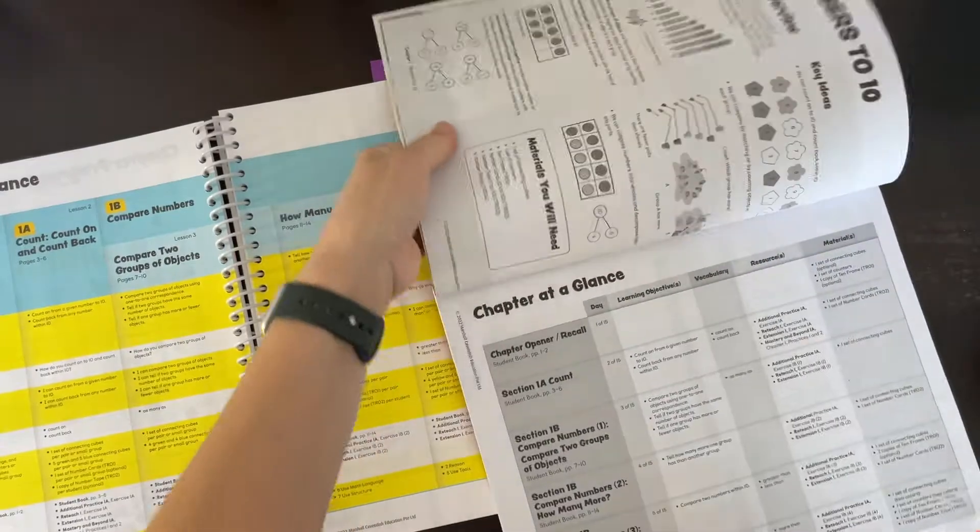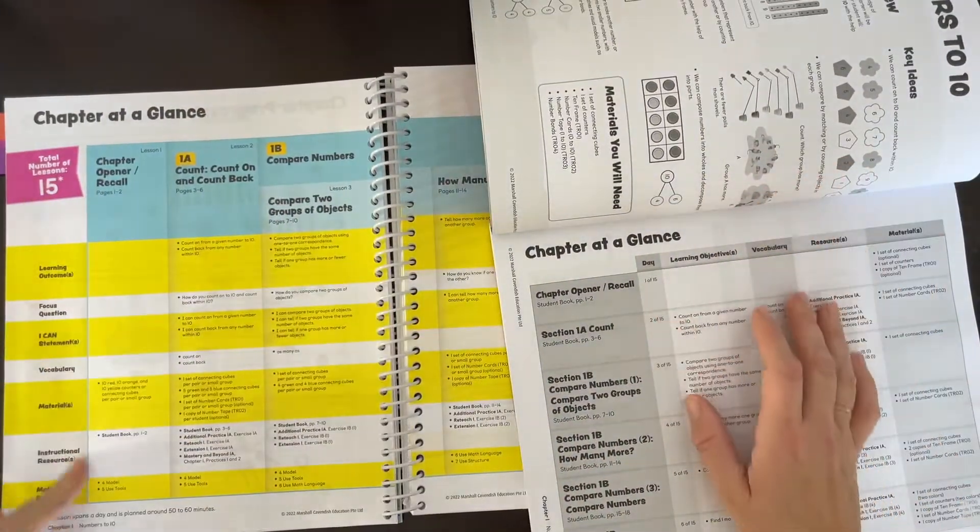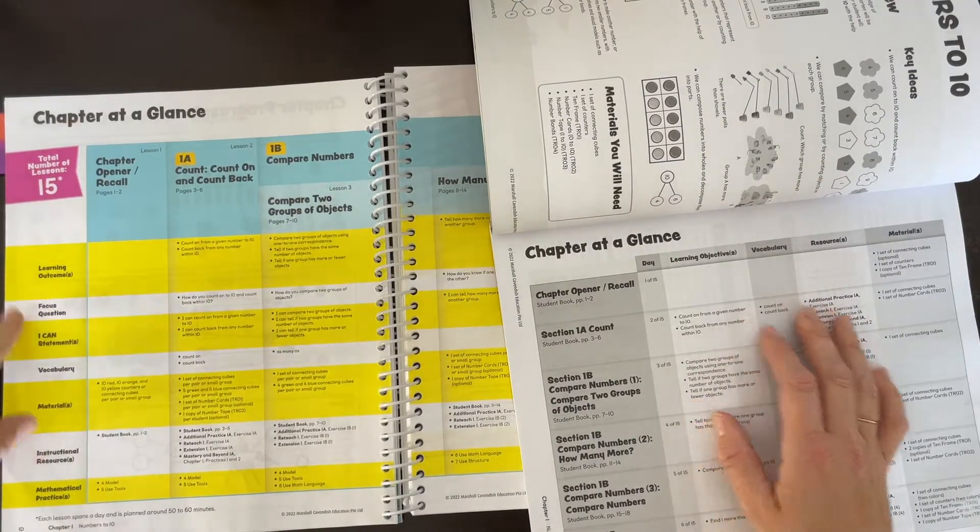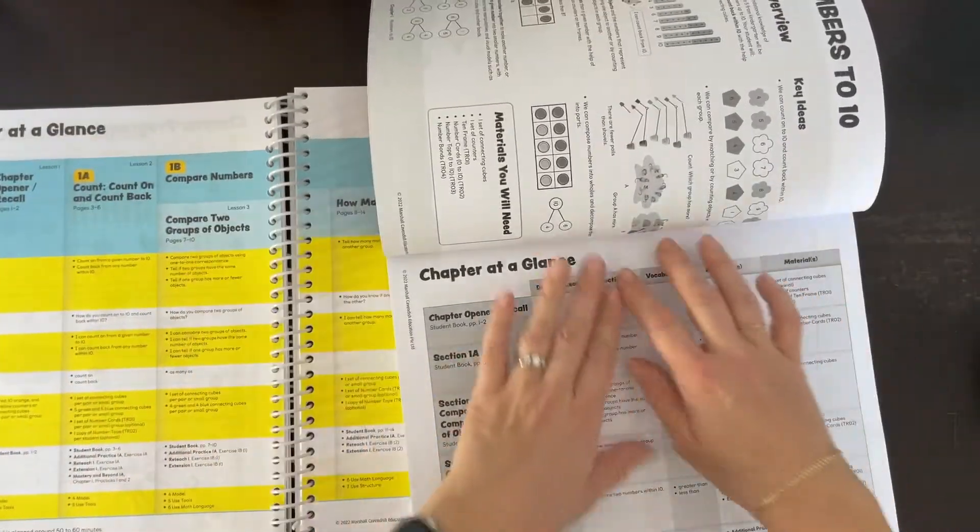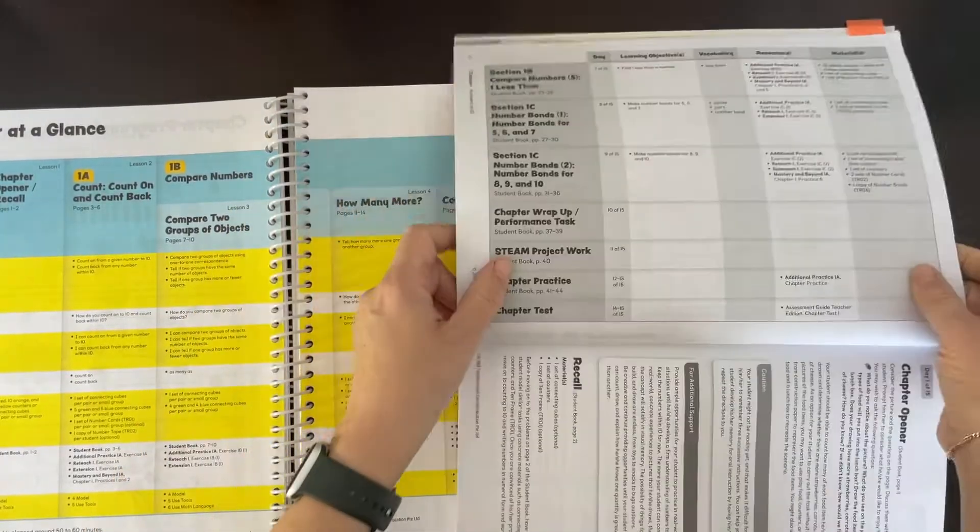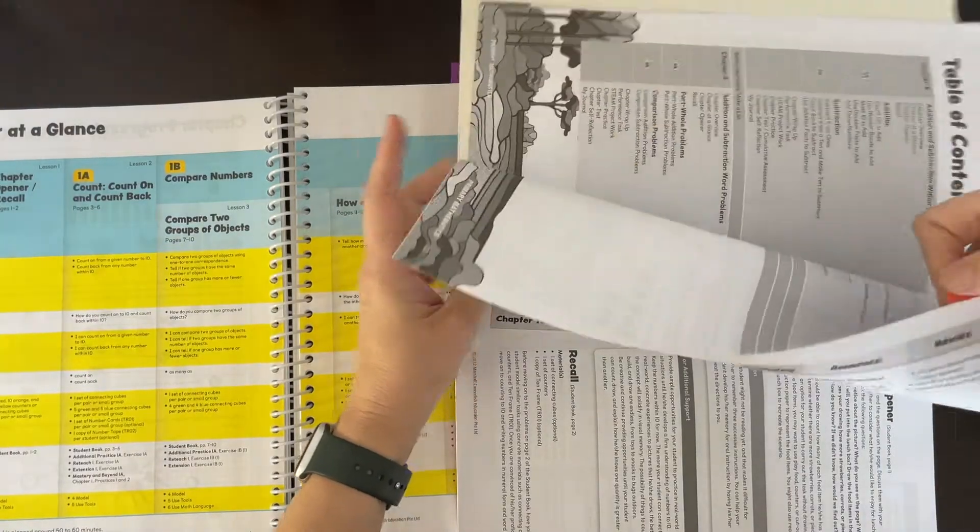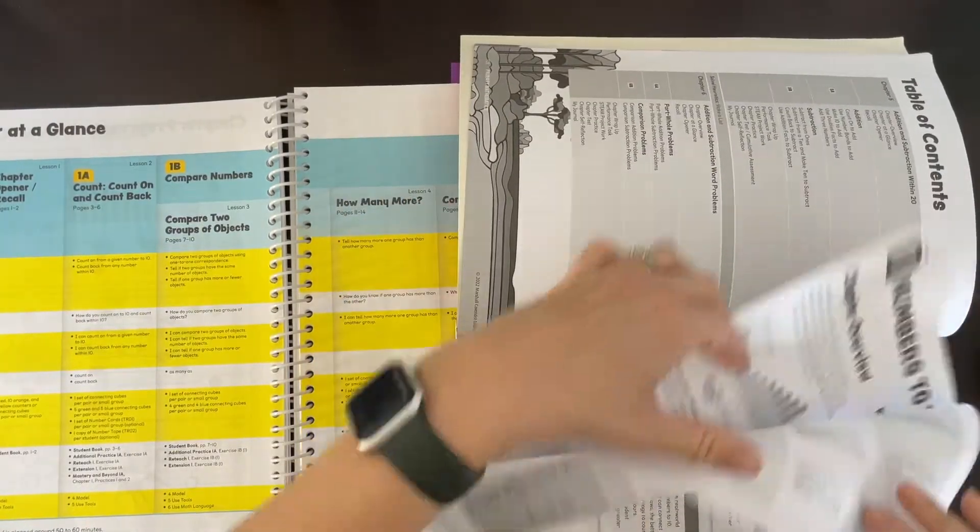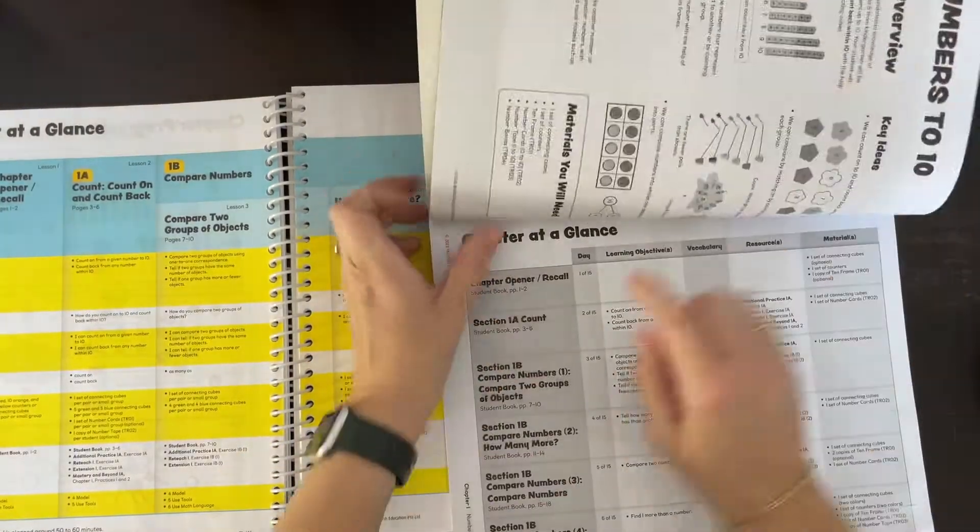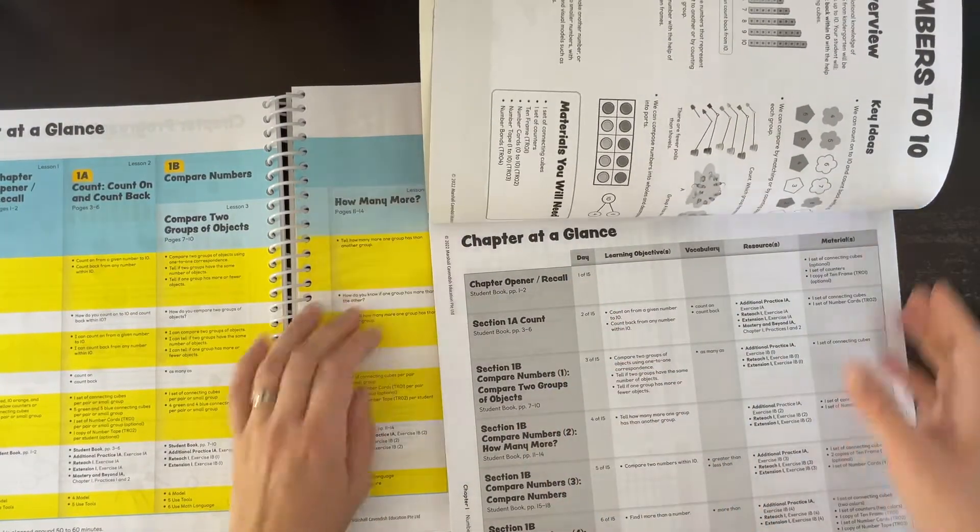The teacher guide has a lot of information, which would be more beneficial for a classroom instructor. The home instructor's guide is nice and streamlined for a homeschool adult. It breaks the lessons down into days—we know there's going to be 15 days for this chapter: day one, day two, day three, etc.